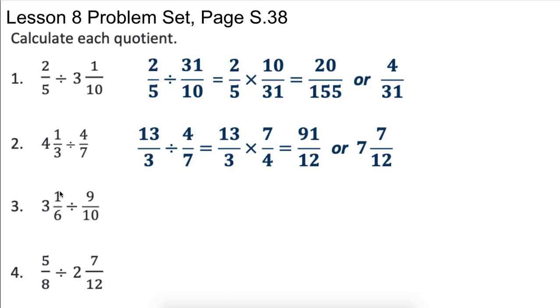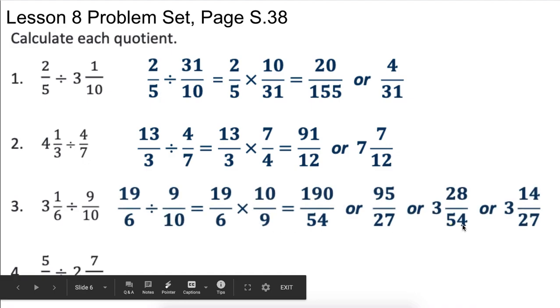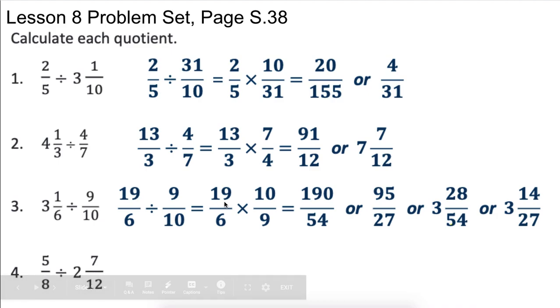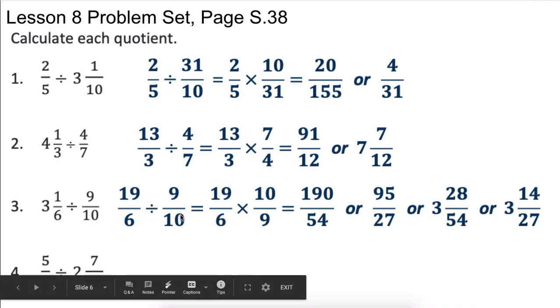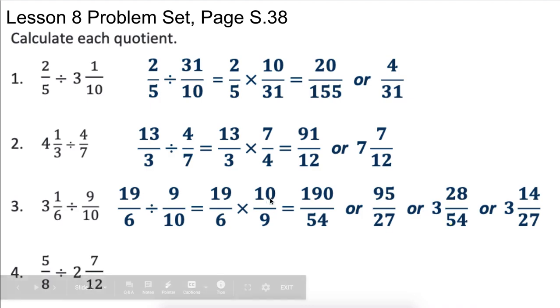So we'd have to change this one to an improper fraction. So three times six is eighteen. That would end up being eighteen plus one would be nineteen-sixths. So we end up with nineteen-sixths divided by nine-tenths, which is equivalent to nineteen-sixths times—again, it's the reciprocal of the second fraction always—ten-ninths. So we flip that second fraction.